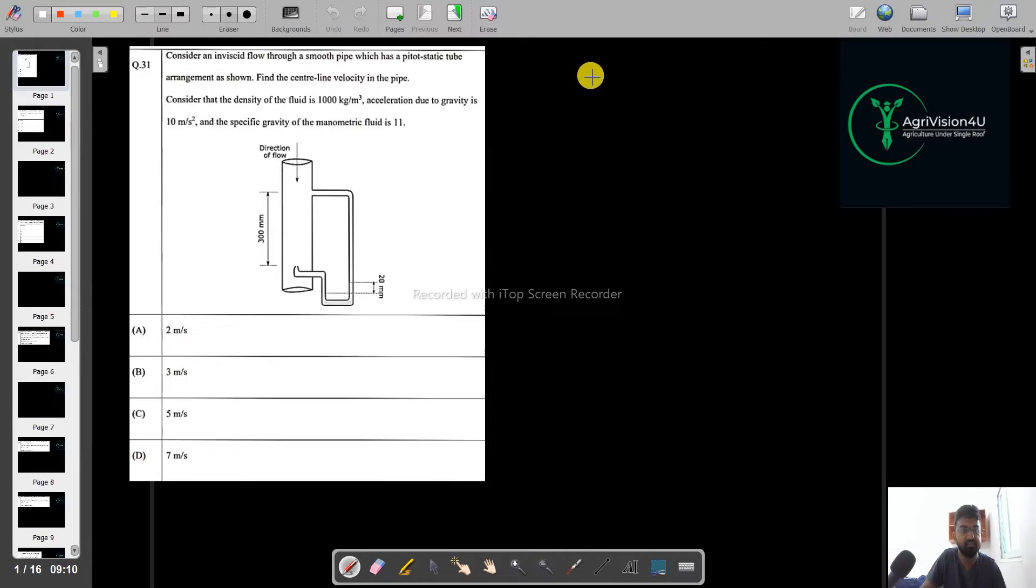Consider an inviscid flow through a smooth pipe which has pitot static tube arrangement as shown. Find the centerline velocity in the pipe, so we have to find the VC, the centerline velocity. The pitot tube is as shown in the figure. Consider that the density of the fluid is 1000 kg per meter cube, acceleration due to gravity is 10 meter per second square and the specific gravity of the manometric fluid is 11.